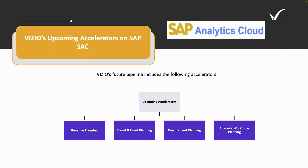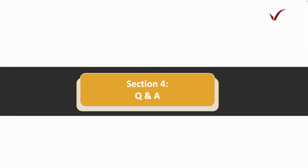At Visio, we are currently working on a few new accelerators that we hope to showcase by the end of the year or early next year. These include accelerators for revenue planning, travel and event planning, procurement planning, and strategic workforce planning. We will be sharing updates as they become available, so keep an eye on our newsletters and social media. We have some time for Q&A — please drop any questions in the box.